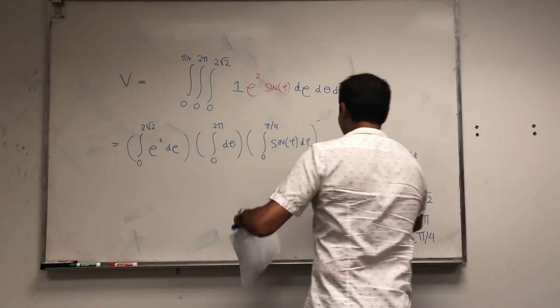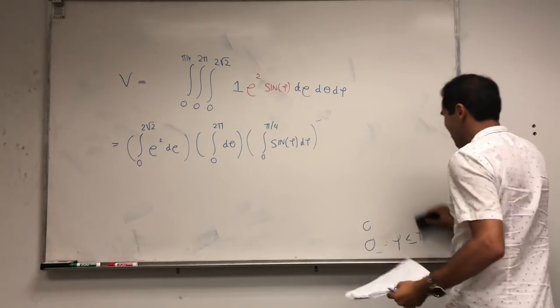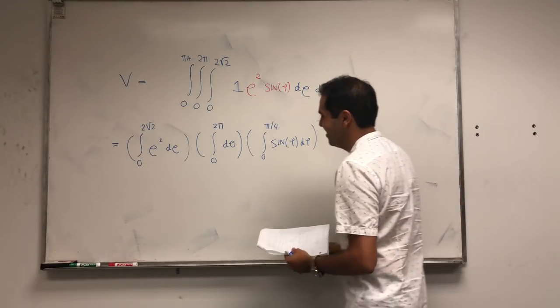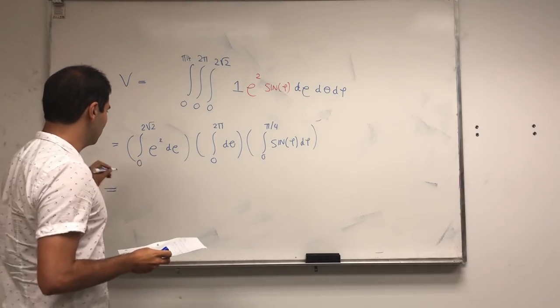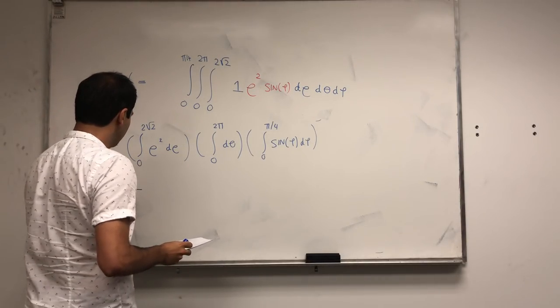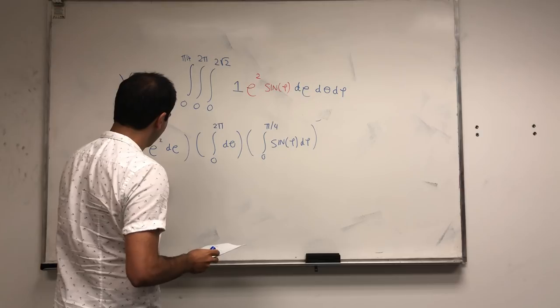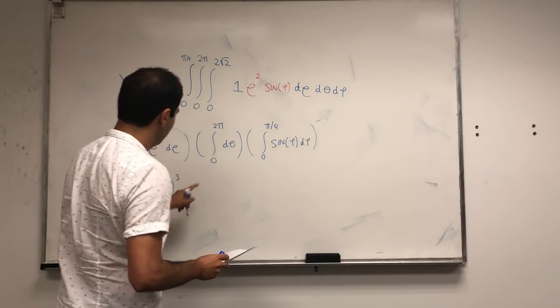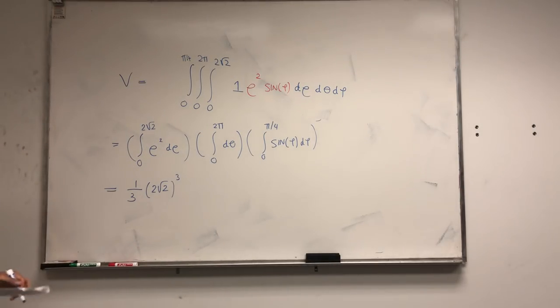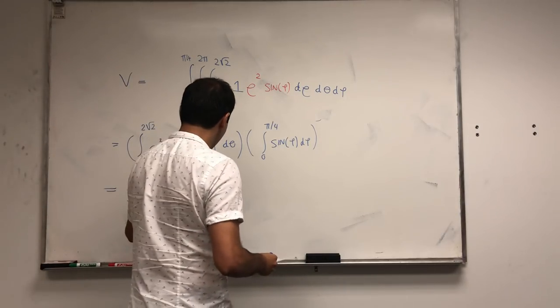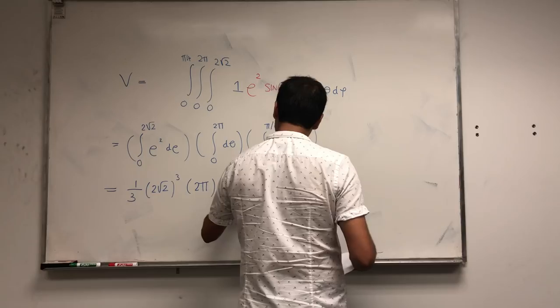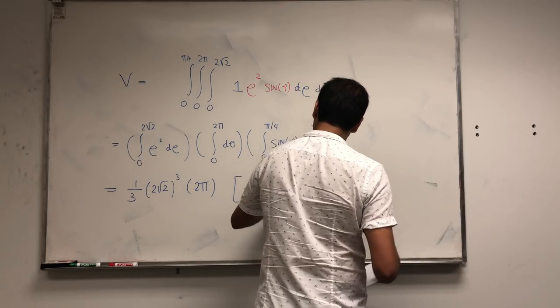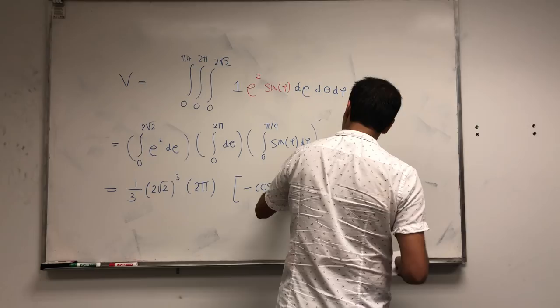And even a single variable calculus student can evaluate this integral now. So rho squared becomes one-third rho cubed, so one-third two square root of two cubed. Integral of one just becomes two pi. And sine of phi, I always have to think about this, so minus cosine of phi from zero to pi over four.